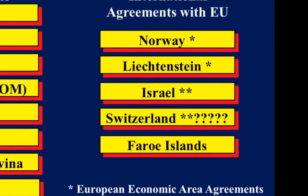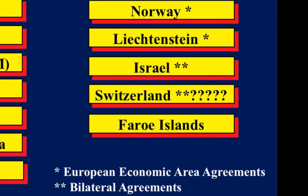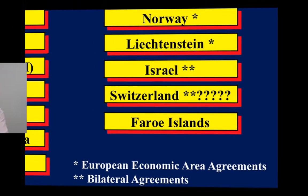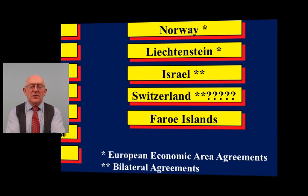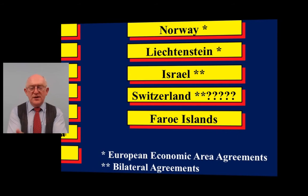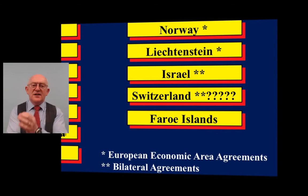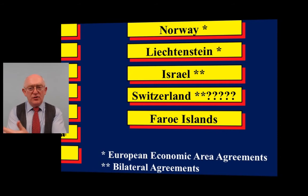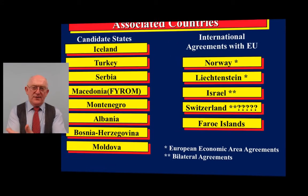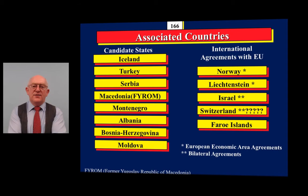There is one exception: Switzerland. At this moment Switzerland has not signed the association agreement, but at the time of preparing this presentation they are allowed to participate in Pillar One — which is ERC, Marie Curie, and FET. If you're looking at Switzerland as a partner, you must double-check the status at the time of submitting. A Swiss partner can participate in a European project; however, in Pillar Two and Pillar Three they have to get funding from Switzerland, but in the case of ERC they can receive EU funding.